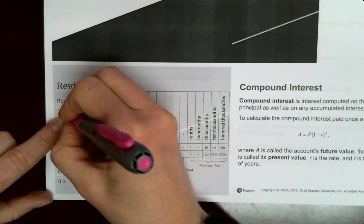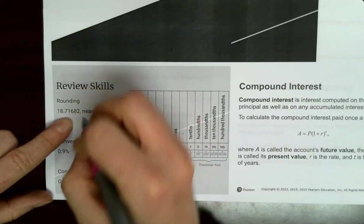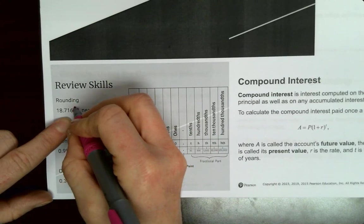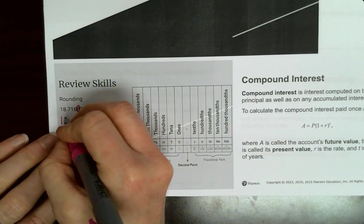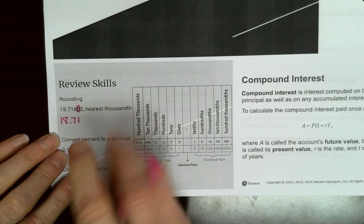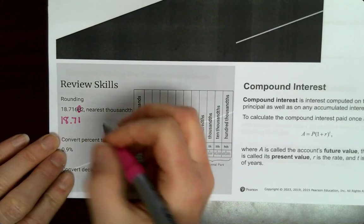Oh no, that was ten thousandths. So it's 6. And so it's the 8 that determines if it goes up or stays the same. So it's 0.71. That 8 is going to make the 6 go up.